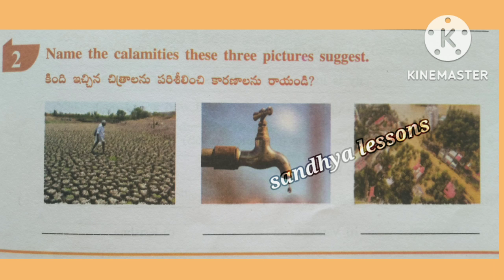Second, name the calamities these three pictures suggest. First picture is about drought, second picture is famine, third picture is about floods.